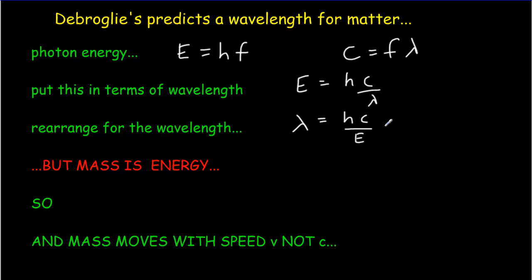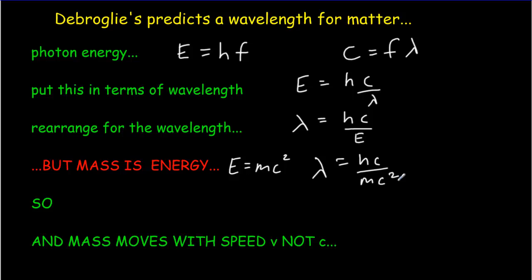Now we want to start thinking in terms of mass. We know there's a relationship between mass and energy: E equals mc squared. So we can think in terms of how much equivalent energy the mass of an electron would be, given by E equals mc squared. For our de Broglie wavelength, we put hc divided by mc squared, replacing photon energy with the equivalent mass energy. Then we cancel out a c.